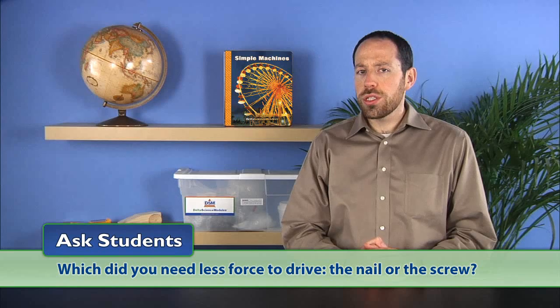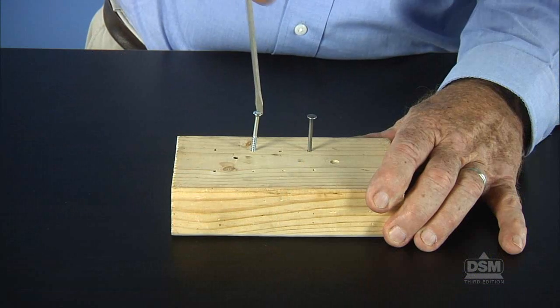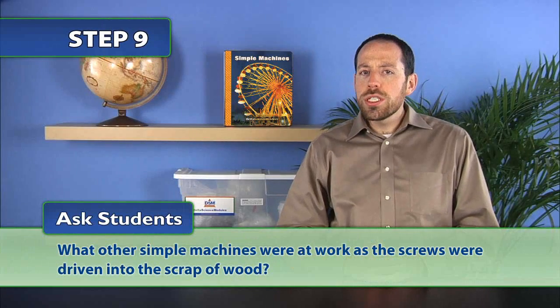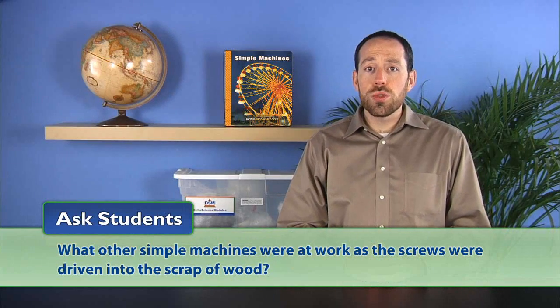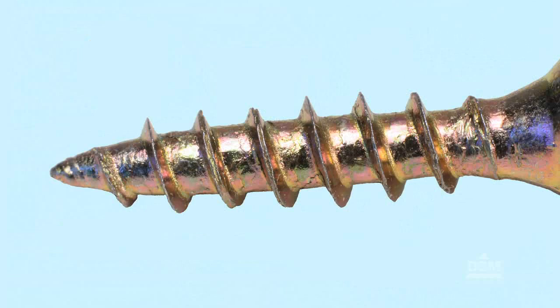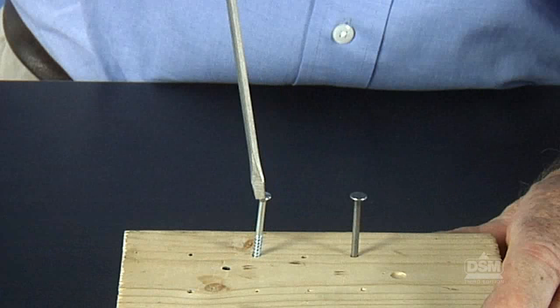When they have finished, ask students, which did you need less force to drive, the nail or the screw? Students should agree that it was easier to drive the screw into the wood, but that it took more time. Then ask students, what other simple machines were at work as the screws were driven into the scraps of wood? Students should mention that the tapered end of the screw is a wedge, the screwdriver is a wheel and axle, and the shaft of the screwdriver is a lever.